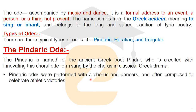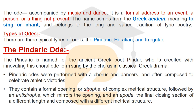Pindaric odes were performed with a chorus and dancers, and were often composed to celebrate athletic victories. They contain a formal opening known as a strophe, which is a complex metrical structure. The three key structural elements found in Pindaric ode are: strophe, anti-strophe, and epode.